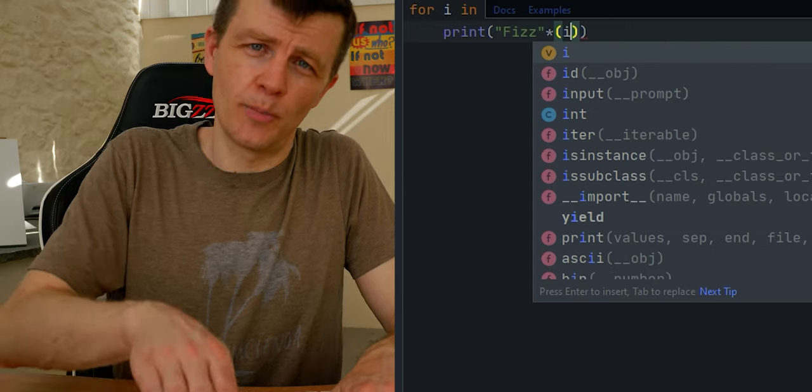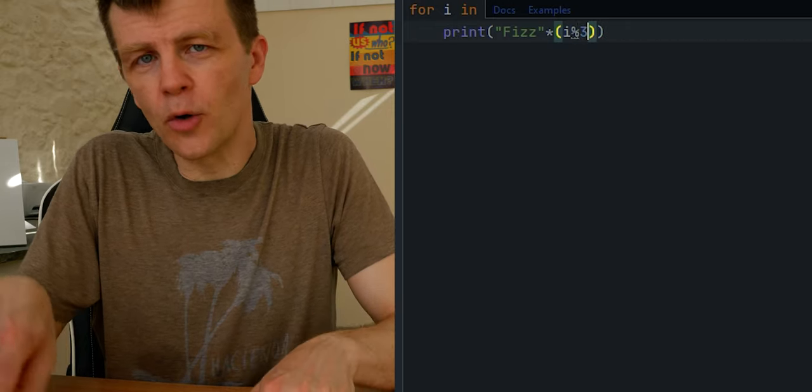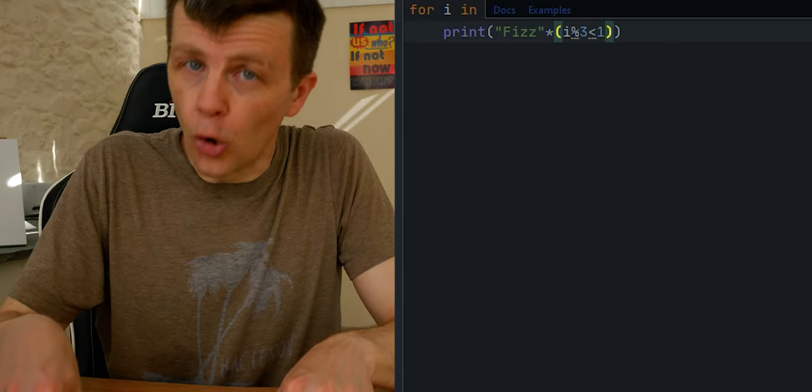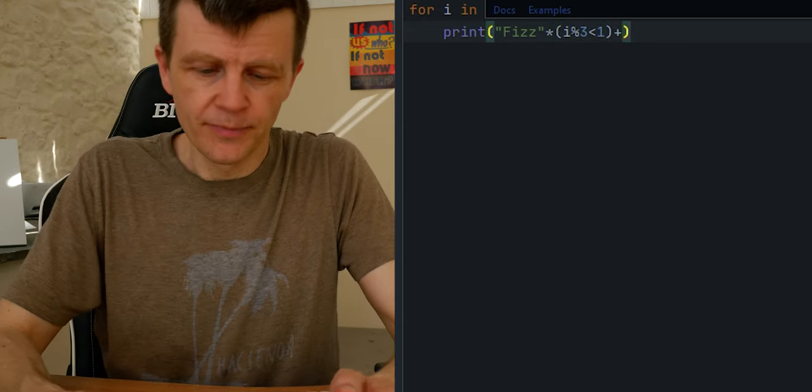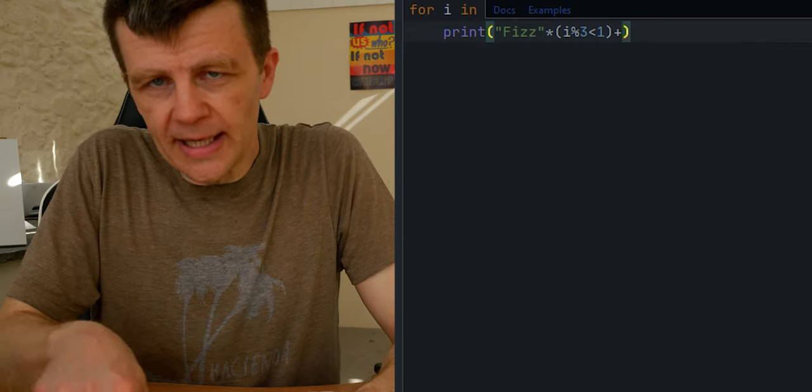Inside that print function we have the word fizz, we have the word buzz, and we have i. Now we'll only get one or the other of those - we'll either get fizz, buzz, or fizz buzz, or the i. We won't get both. That's the way the or operator within the print function works.